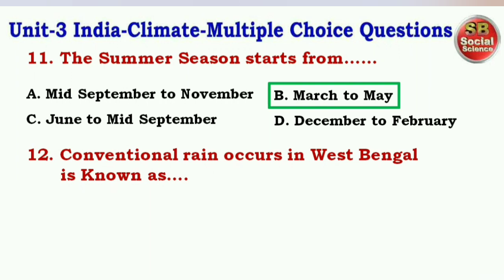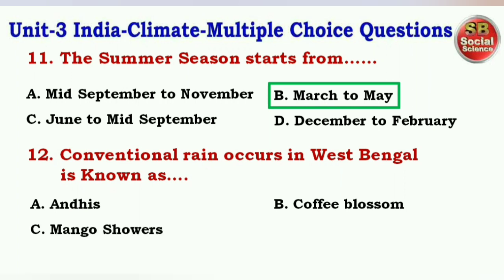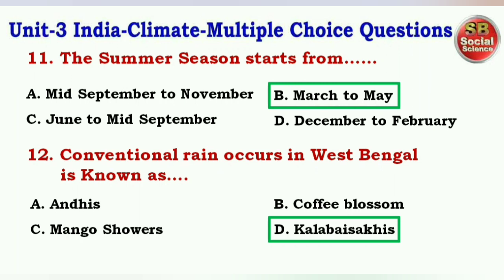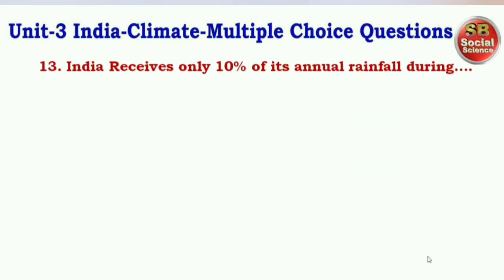Next question: Conventional rain that occurs in West Bengal is known as — options are Andhi, Coffee Blossom, Kala Baisakhi, Mango Showers. The right answer is option B — Kala Baisakhi.